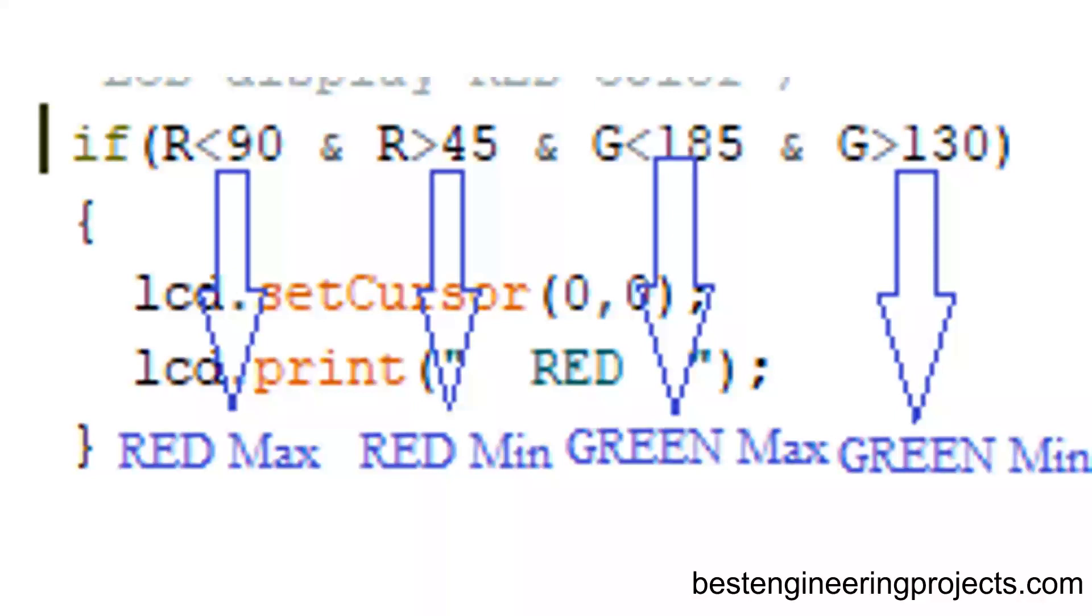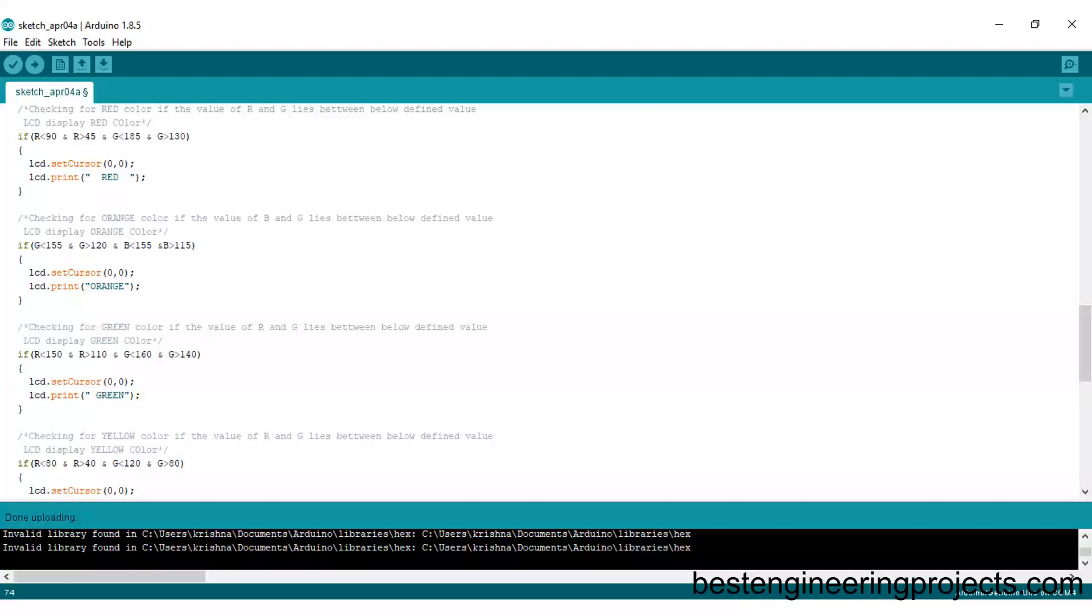Now repeat this process for all other colors with upper and lower frequency limits. Now your code is ready. Upload it to your Arduino UNO board and your project is ready to test.